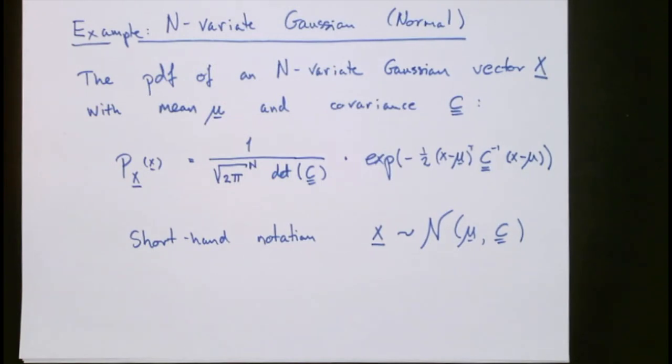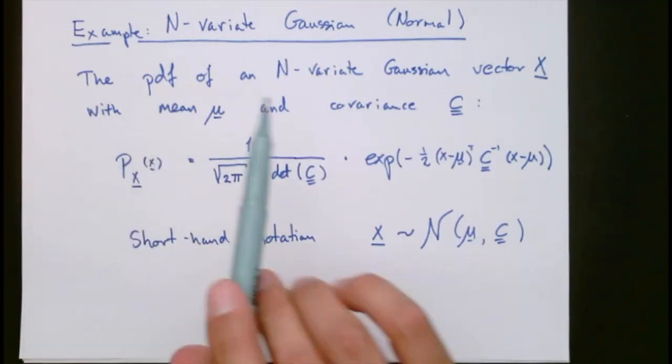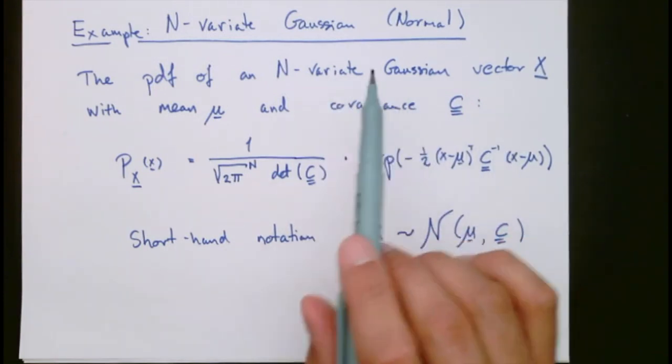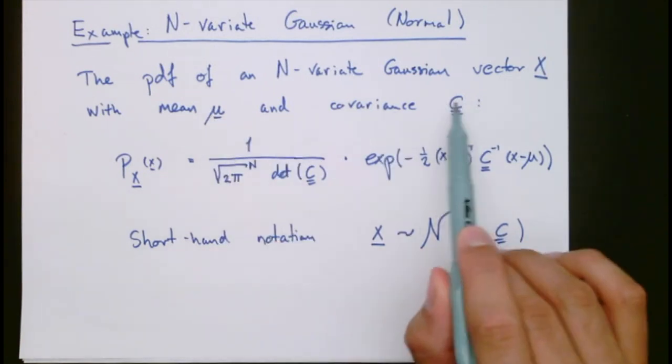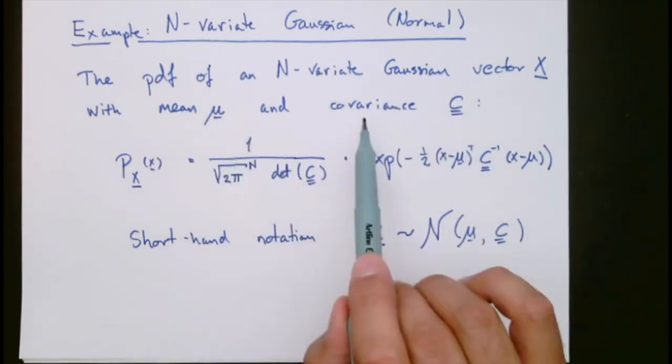One example of a joint pdf is the one from an N-variate Gaussian or normal distribution. So this pdf, here we have a vector x, which is an N-variate Gaussian. It has two parameters. One is the mean and another one is the covariance. We will come back to how to define these.